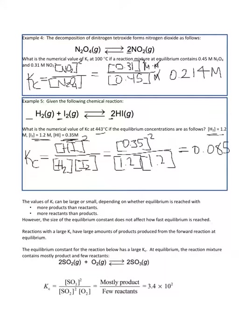No units on this one because we have M times M divided by M times M. The units on the numerator are M squared and on the denominator are M times M, so everything cancels and there are no units at all.